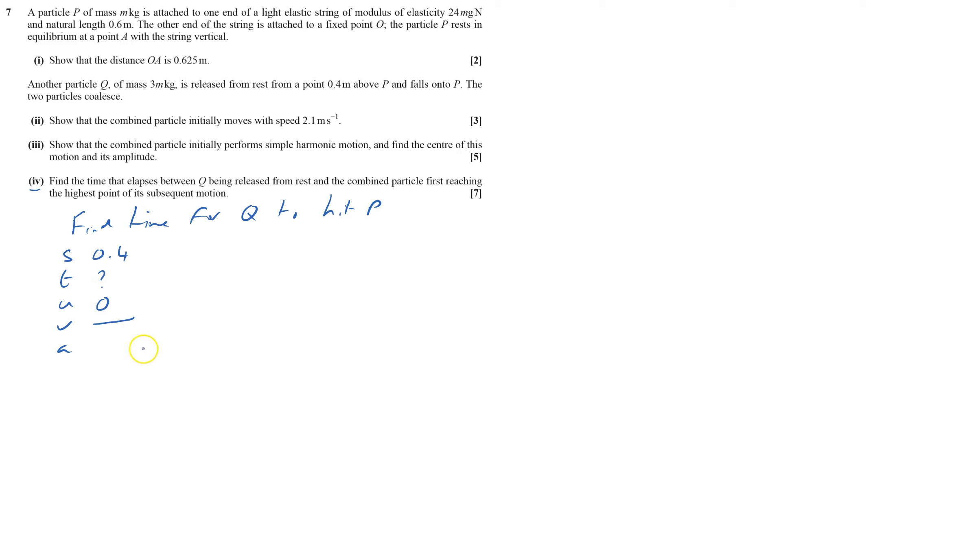So Q starts from stationary. I don't care what it hits at. Acceleration, because I'm going downwards, taking that to be positive, that's 9.8. That's the one without V. So that'll be S equals UT plus half AT squared.